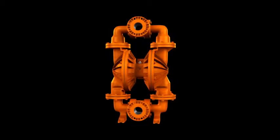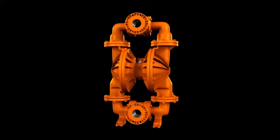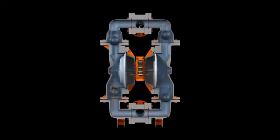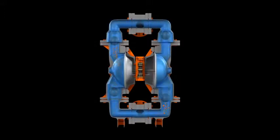This is a Wilden PX1500 76 millimeter 3 inch advanced aluminum pump. The liquid chambers are alternately filled and emptied by fluid that is drawn through a common inlet and discharged through a single outlet.